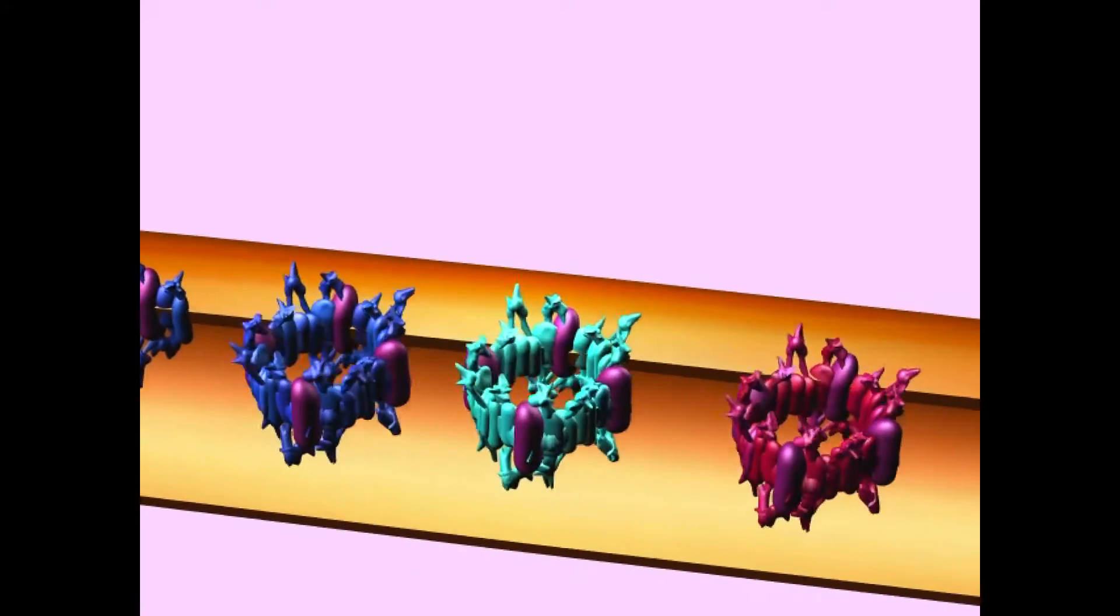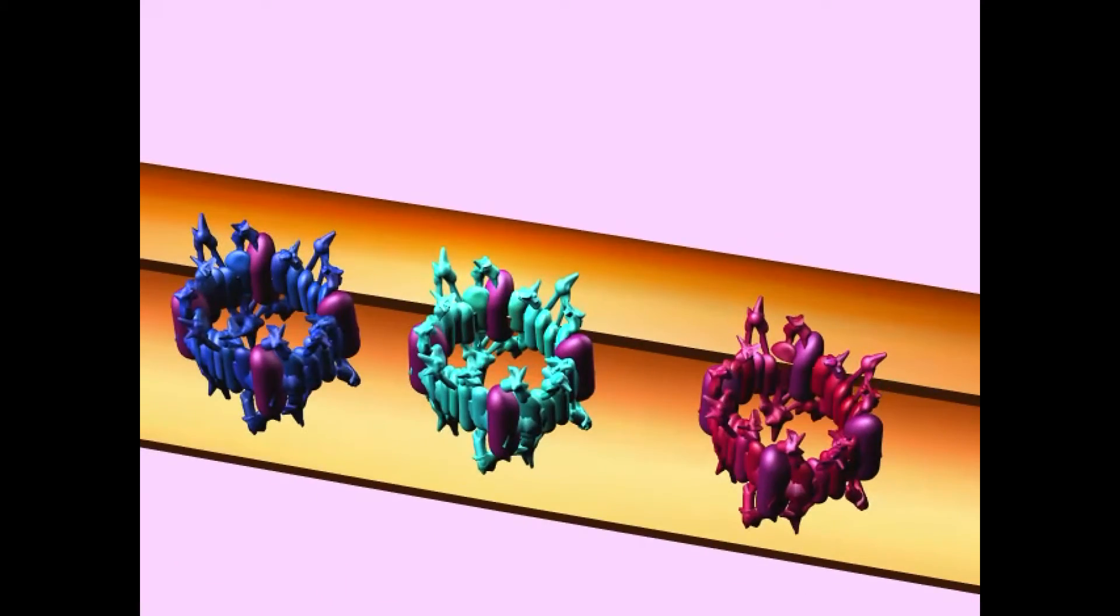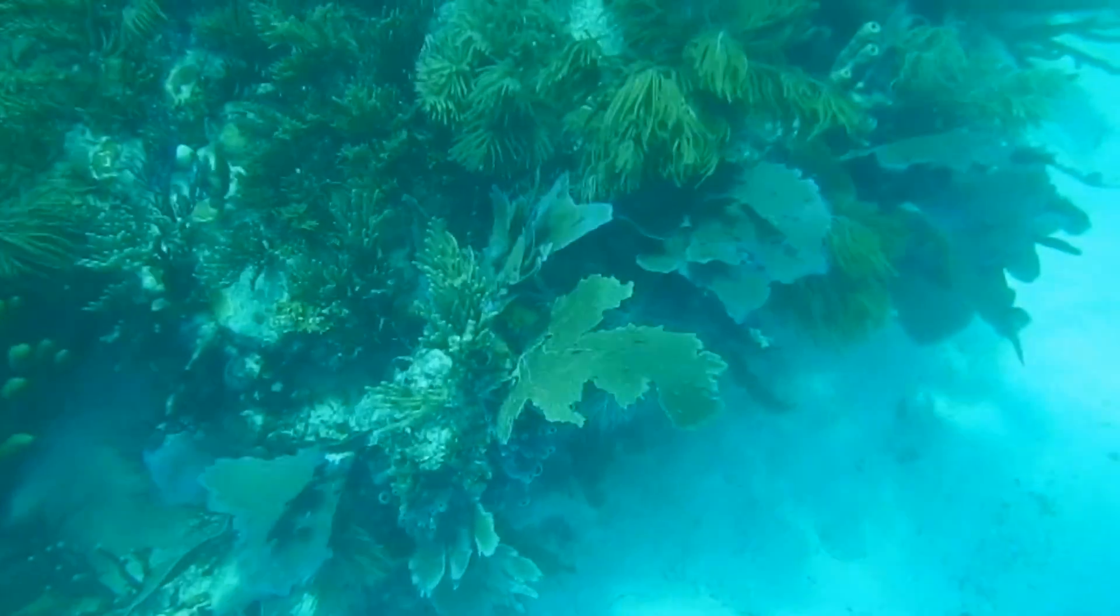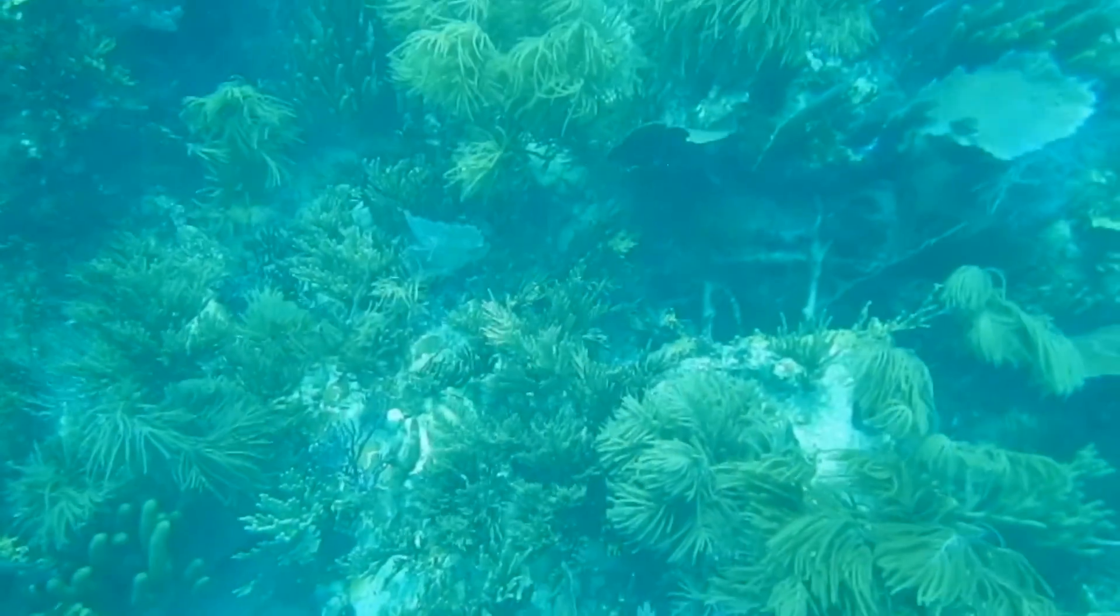Gene duplications had produced multiple copies of the ion channel genes by the evolution of the metazoan animals.